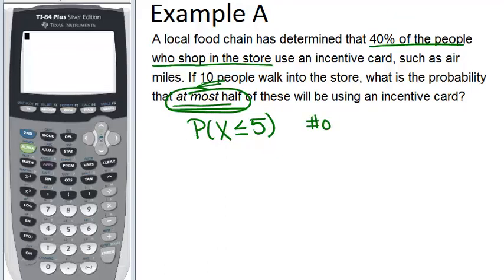The number of trials in this problem is 10 because 10 people are walking in and each person walking in is like a trial. We know that there is a 40% chance that each person will use an incentive card. So P equals 0.4 and this is all the information we need and we can now use our calculator to figure out the answer.